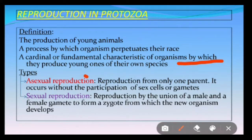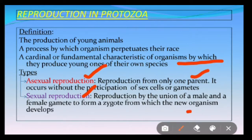Protozoans use two types of reproduction: asexual and sexual. In asexual reproduction, sex cells or gametes are not involved, and reproduction takes place from only one parent. Whereas in sexual reproduction, male and female gametes are produced and these gametes fuse during the process of fertilization, and a zygote is formed. When the zygote undergoes development, it results in the formation of a new organism.